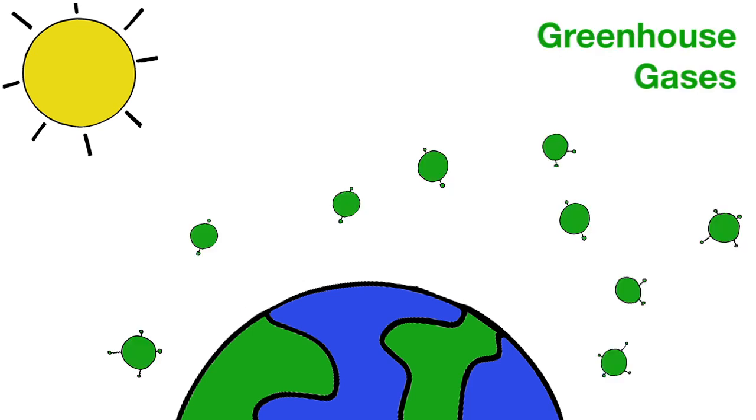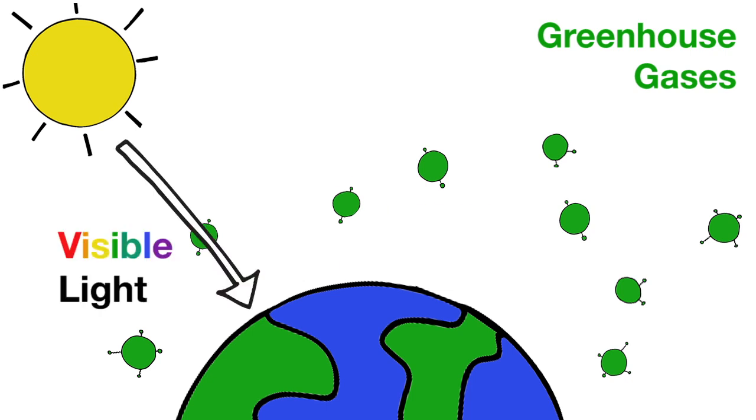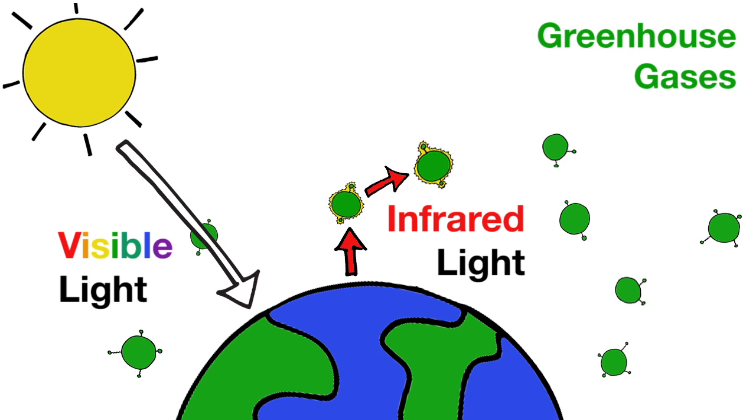Greenhouse gases in the atmosphere, such as methane and carbon dioxide, let visible light pass through but absorb infrared light, causing the atmosphere to retain heat. This energy can be absorbed and emitted by the atmosphere many times before it eventually returns to outer space. The added time this energy hangs around has helped keep Earth warm enough to support life as we know it.